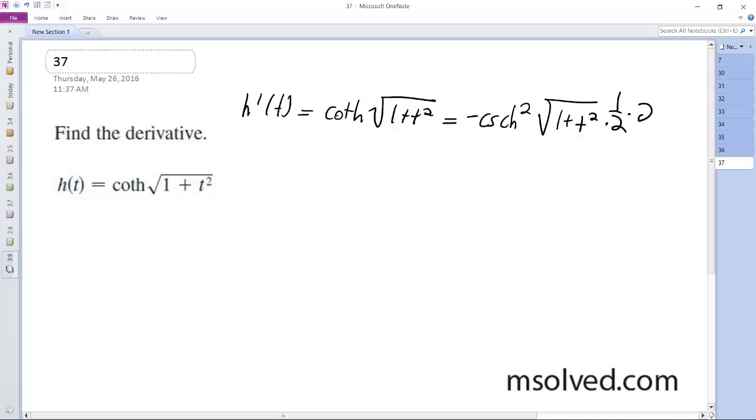and then derivative of the inside is 2t, and then times 1 plus t raised to the negative 1 half t squared. Okay,